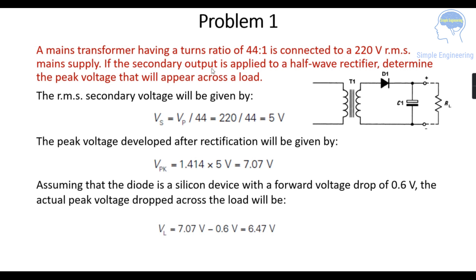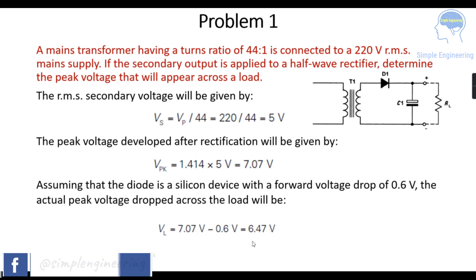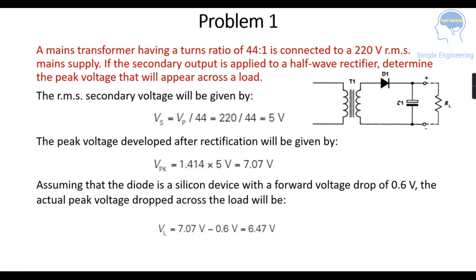So in the question, if the secondary output is applied to a half-wave rectifier we have to determine the peak voltage. Our peak voltage Vpk is equal to 7.07 volt, and the voltage across the load is 6.47 volt, as there is a voltage drop of 0.6 volt due to the silicon diode. Let's move to Problem 2.